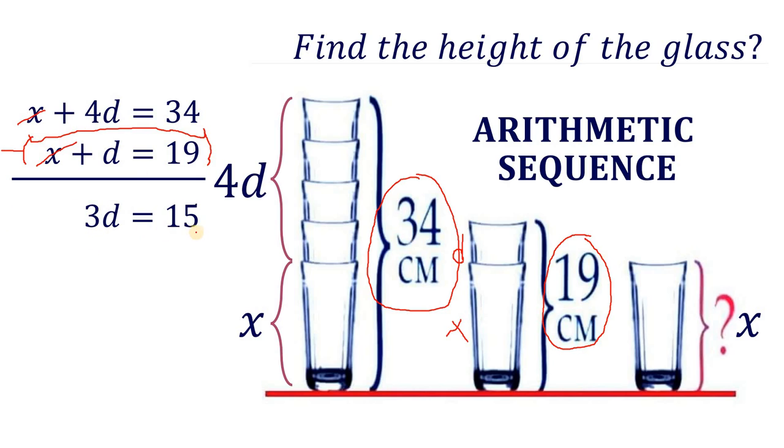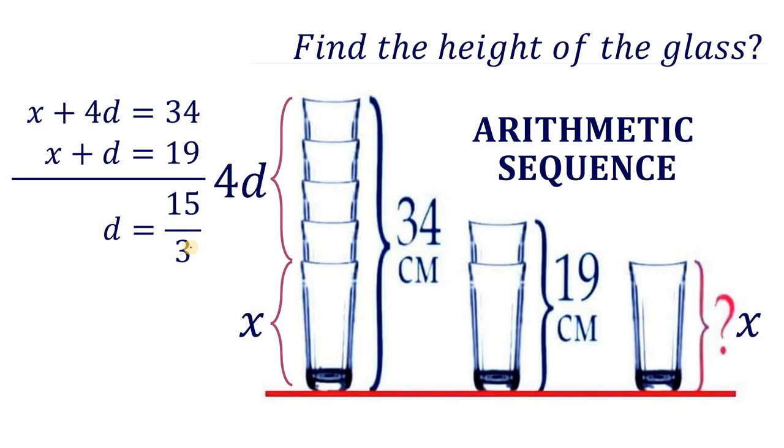So we have an equation 3d equals 15. So we can now solve for the value of d. Let's divide both sides by 3. Now, 15 divided by 3 gives us the value of d as 5.